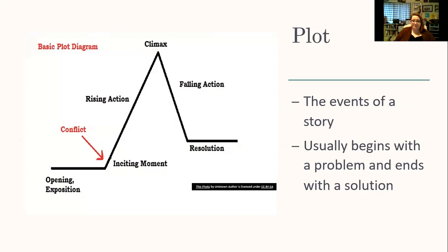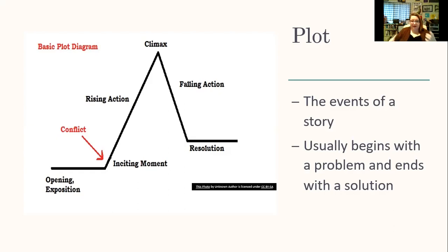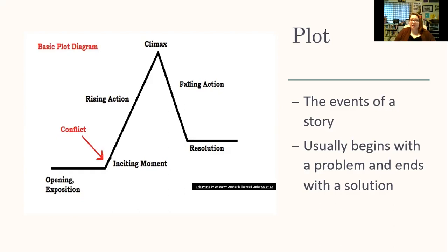Plot is the events of a story. It usually begins with a problem and ends with a solution — though sometimes a solution isn't a neat one; it can just be where we are right now. You'll have an opening or exposition that lets your reader know what's going on, then an inciting moment or initial conflict. Then rising action — the events leading to the climax, which is the most exciting scene where the protagonist has to deal with the main problem. Then falling action, which wraps up, and the resolution, which is the end of the story.